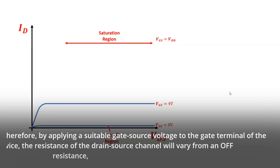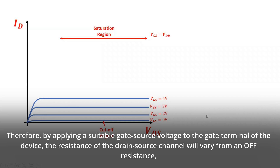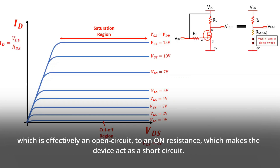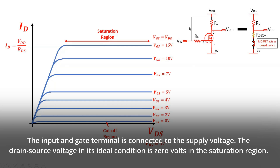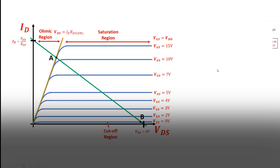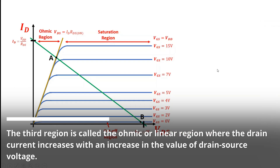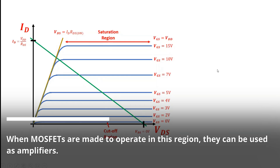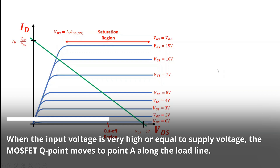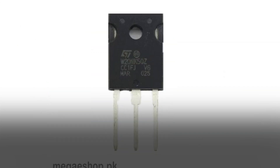By applying a suitable gate-source voltage to the gate terminal, the resistance of the drain-source channel will vary from an off resistance, which is effectively an open circuit, to an on resistance, which makes the device act as a short circuit. The input gate terminal is connected to the supply voltage. The drain-source voltage in its ideal condition is zero volts in the saturation region, and the MOSFET operates as a low-resistance closed switch due to the impact of the on-state resistance. The third region is called the ohmic or linear region, where the drain current increases with an increase in the value of drain-source voltage. When MOSFETs operate in this region, they can be used as amplifiers. When the input voltage is very high or equal to supply voltage, the MOSFET operating point moves to point A along the load line.